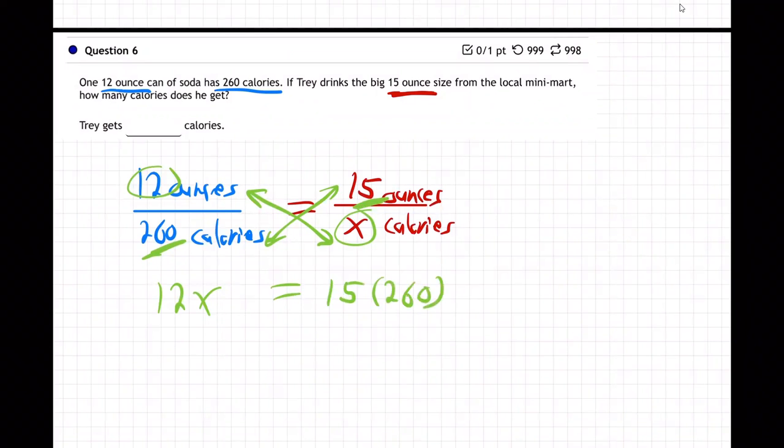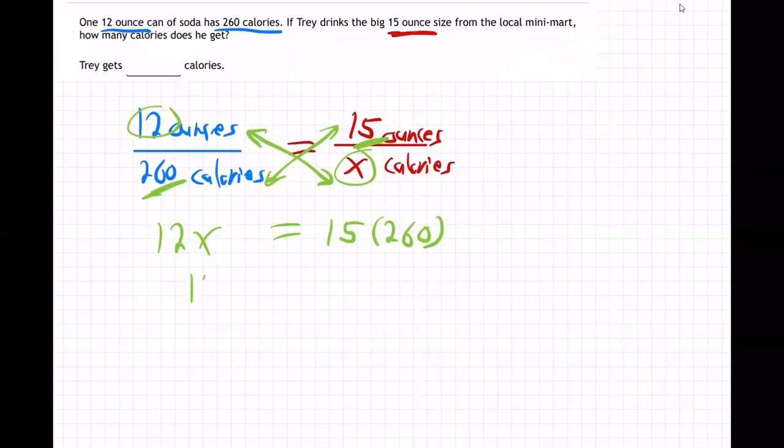So 12x equals, and then 15 times 260, I'm getting 3,900.